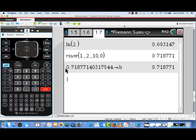Let's do that again, but this time let's do a right endpoint Riemann sum with the same interval and the same number of subintervals. So we'll do rsum of 1 comma 2, 10 subintervals, and this time we'll choose p equals 1, which will give us the right endpoints, and we can see that value. Now let's actually store this away in the variable rs for right sum.